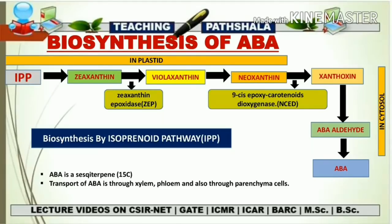Now we are going to talk about the biosynthesis pathway of abscisic acid. It follows the isoprenoid pathway, starting with the precursor molecule IPP — isopentanyl diphosphate, also called isopentanyl pyrophosphate. This is an isoprenoid unit and the overall precursor molecule is IPP. We have already seen many pathways that follow this isoprenoid pathway, especially in the case of gibberellin.